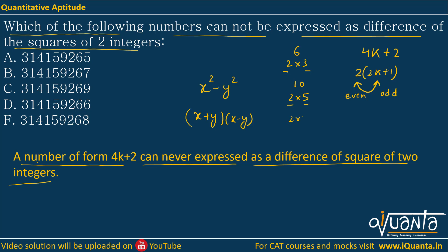Similarly, if you put k equal to 7, you will be getting 28 plus 2, which is 30. 30 can be written as 5 into 6, again one is odd and one is even. So we can say that the RHS will be a product of odd and even.